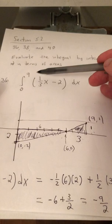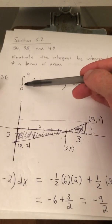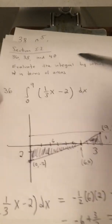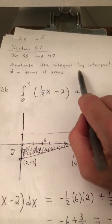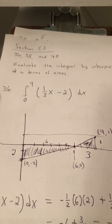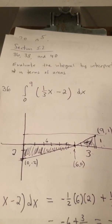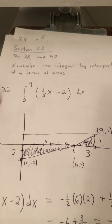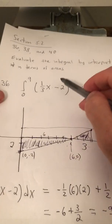So again, the value of this integral is negative 9/2, but the point of this problem is to interpret it in terms of areas. Now this particular problem, you could have used the definition, and it would not have been difficult.